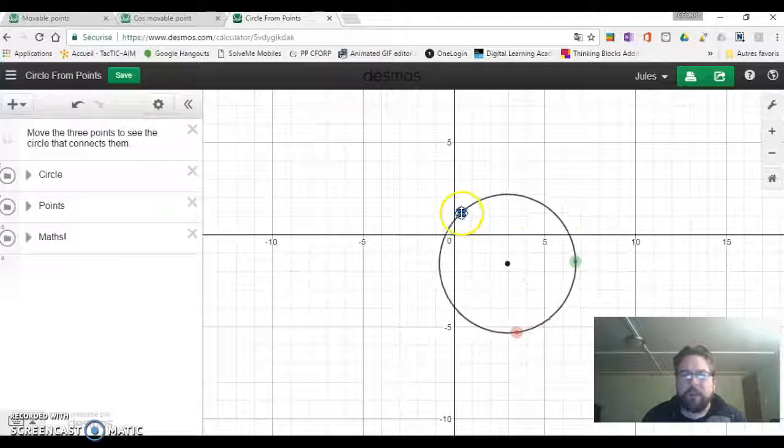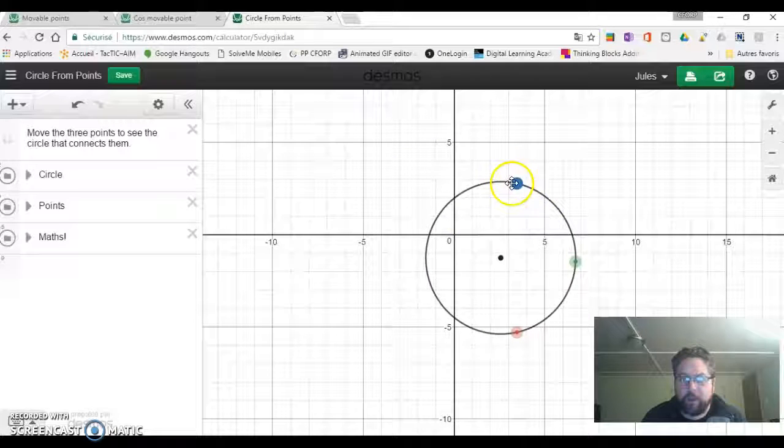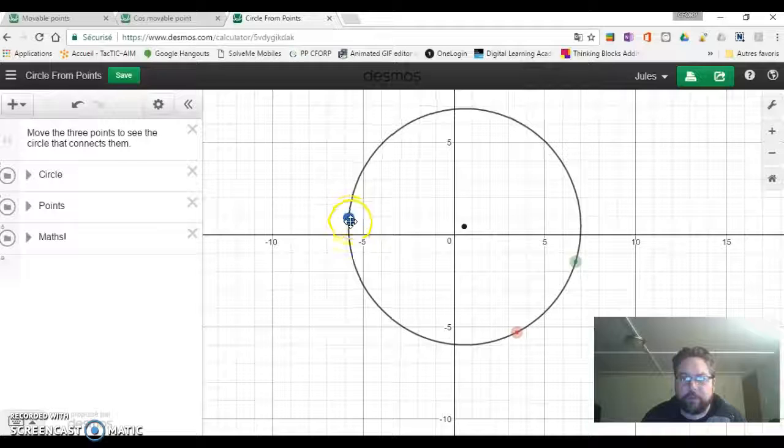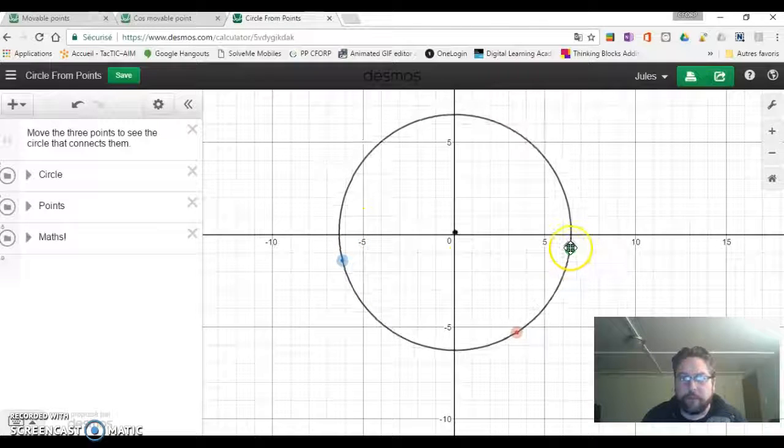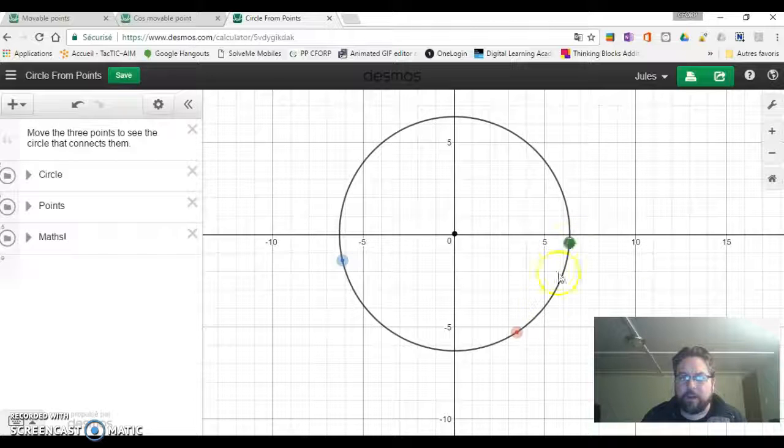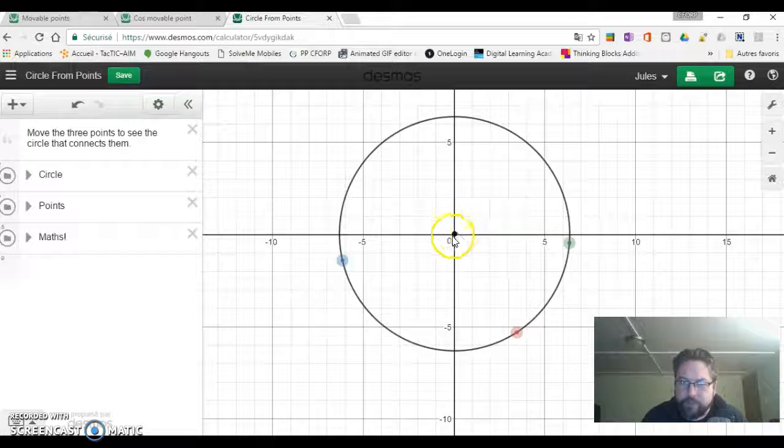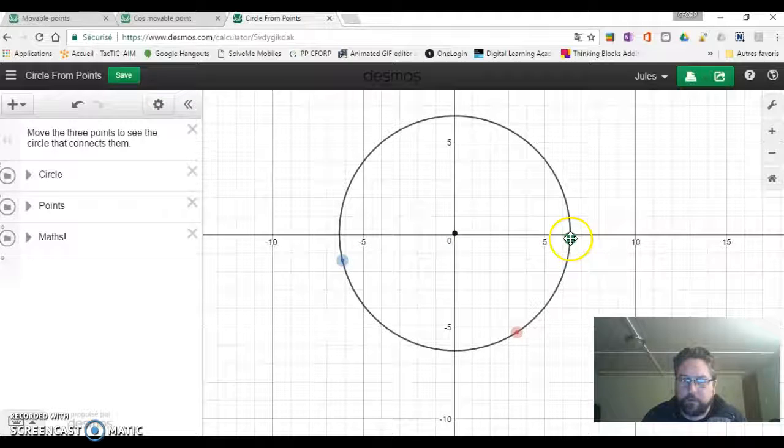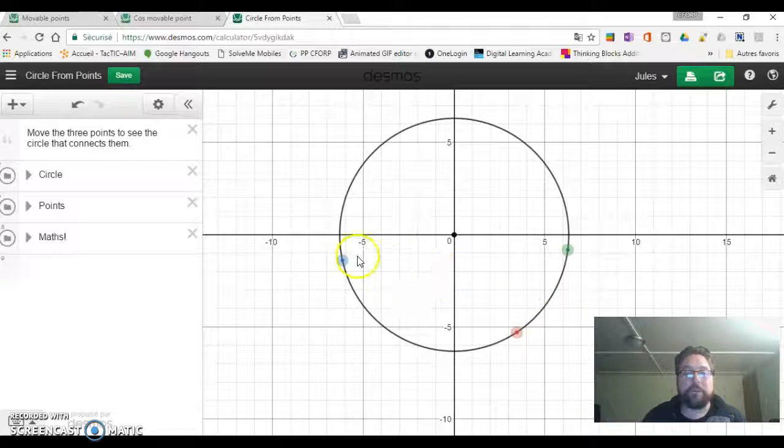Imagine what we can do and what questions we can ask. I'm wondering: what are the possibilities of these points? How can we set them up so that the center of the circle is at the origin? How many possibilities are there? What's the relationship between the three points for the center of the circle to be at zero, zero? That's a cool thing.